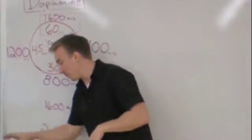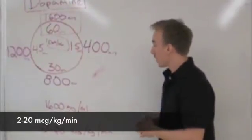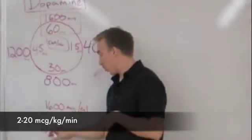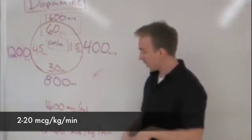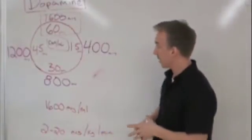Before we set up our administration, we're going to talk about dosing dopamine. Dopamine is dosed in a wide range from 2 to 20 micrograms per kilogram per minute. So not only is it a wide range, but it's also weight and time based.